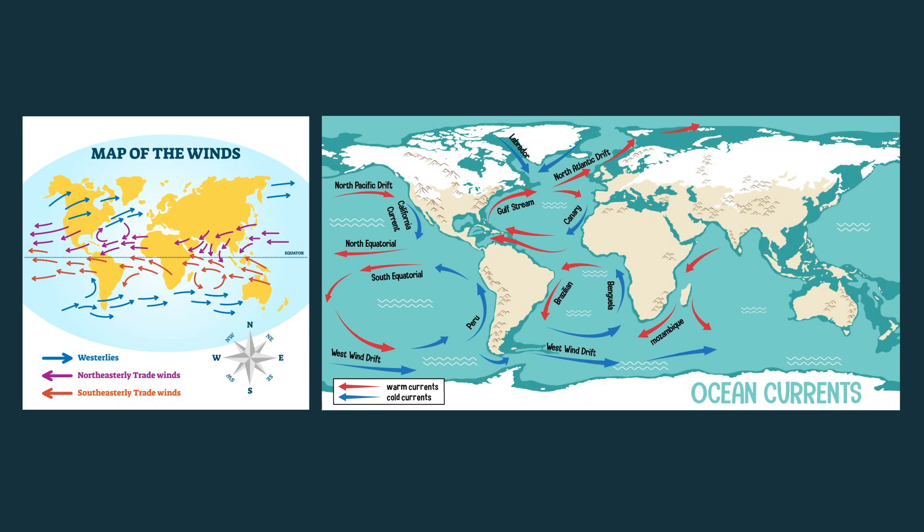The sun's heat is distributed around the globe by convection, wind patterns, and ocean currents, and the warmth from the sun helps create precipitation. All of those contribute to the climate of any given location on Earth.